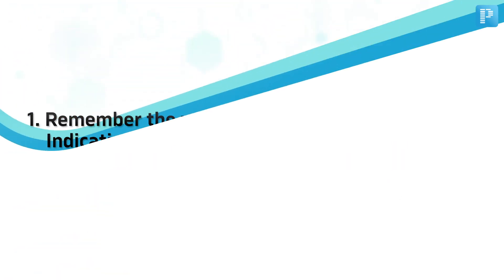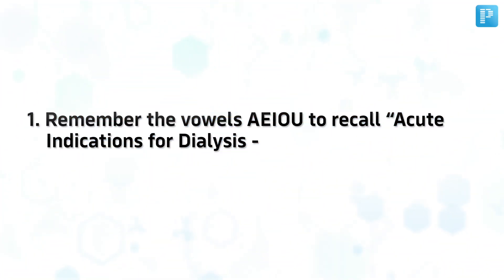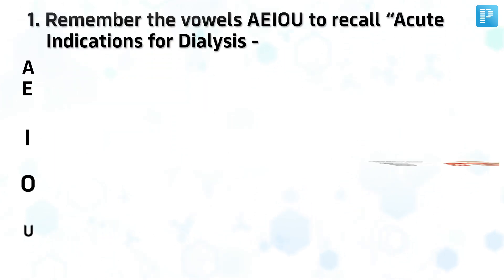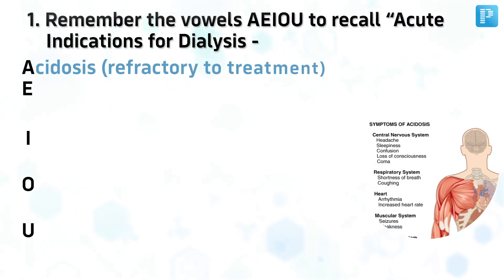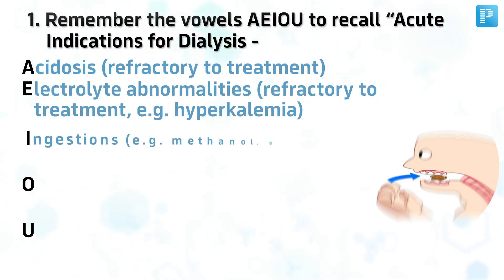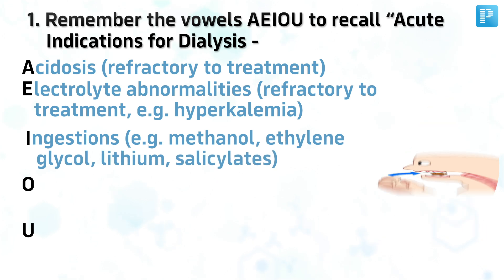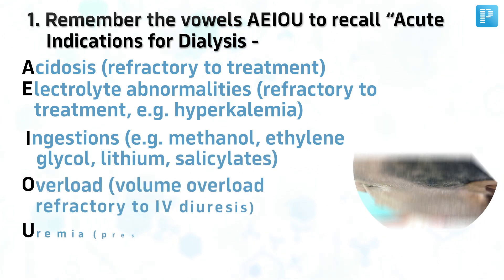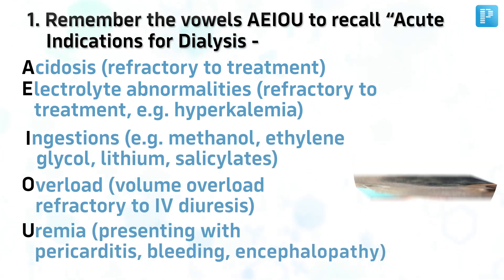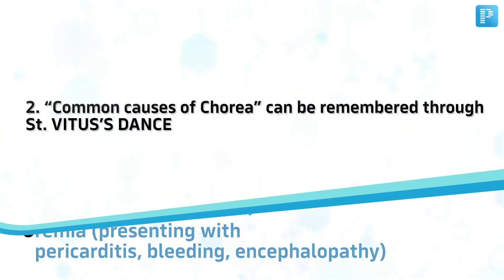Number 1. Remember the vowels A-E-I-O-U to recall acute indications for dialysis: Acidosis, Electrolyte abnormalities, Ingestions, Overload, Uremia.